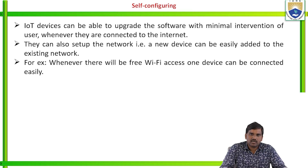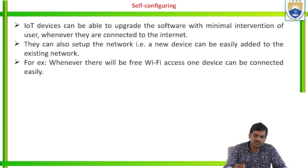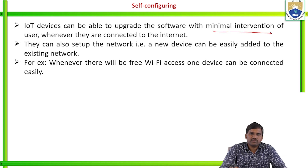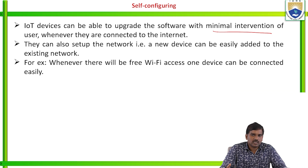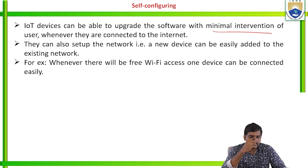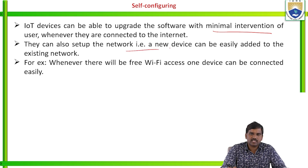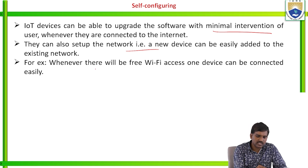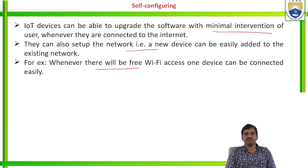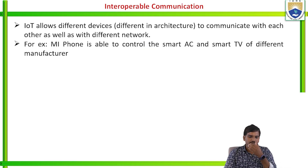Self-configuration means the device can automatically configure data when it is started. IoT devices can operate software with minimal user intervention whenever they are connected to the internet — like Bluetooth, which automatically connects to a paired device. A new device can be easily added to the existing network. For example, when there is free Wi-Fi access, one device can connect easily without any permissions.